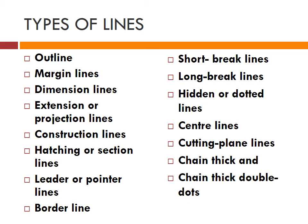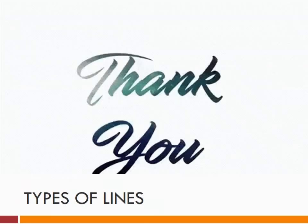Center lines indicate the axis of cylindrical, conical, or spherical objects or details — they are thin long chain lines. Cutting plane lines show the location of a cutting plane; they are long thin chain lines, thick at the ends only, and are used to indicate special treatment on the surface. Chain thick double dot and chain thin double dot are additional line types used in technical drawing.